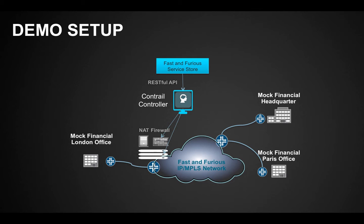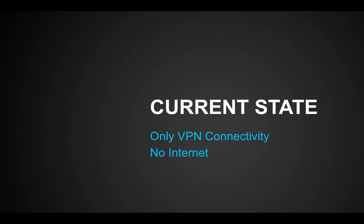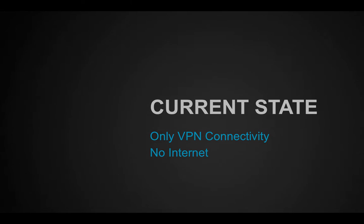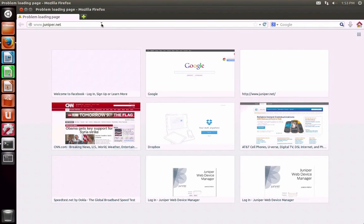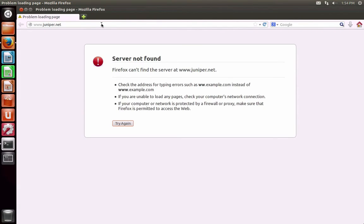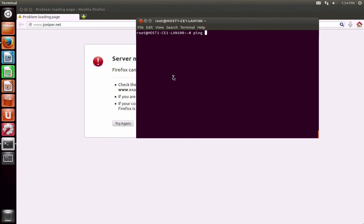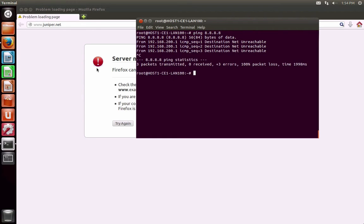We will show this demo from the perspective of Mach Financial, a Fast and Furious customer with headquarters in Berlin and branch offices in London and Paris. Mach Financial currently receives their VPN service from Fast and Furious and internet services from another provider, but is unhappy with their often disrupted internet access. Trying to browse any internet site from a host in Mach Financial's VPN results in a failure, and pinging a public DNS server is also unreachable, but the VPN service remains intact.